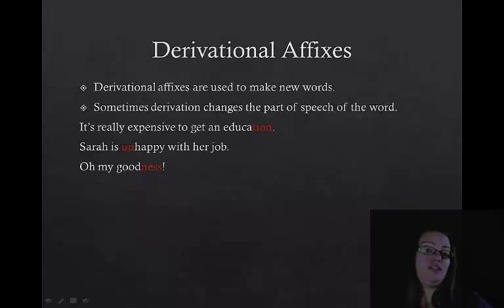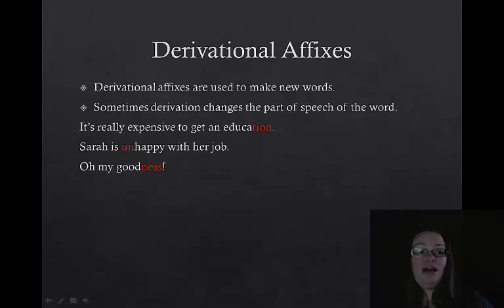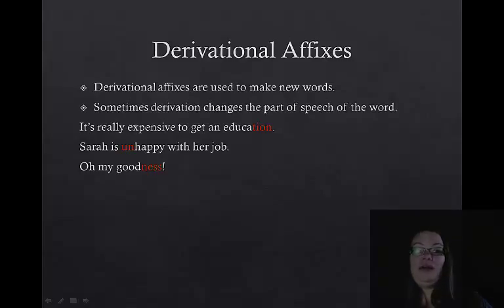Here are some examples of derivational affixes. Derivational affixes are used to make new words, and sometimes derivation changes the part of speech of a word. For example, in it's really expensive to get an education, the root word is educate — a verb — but when we add -tion, it changes from a verb to a noun. In Sarah is unhappy with her job, the prefix un- is added to the adjective happy to make a new word meaning the opposite, and it stays an adjective. And when we add -ness to good, it becomes a noun — goodness.